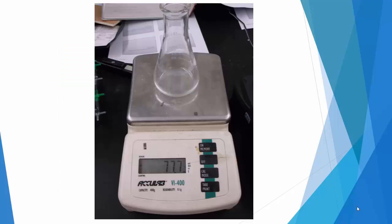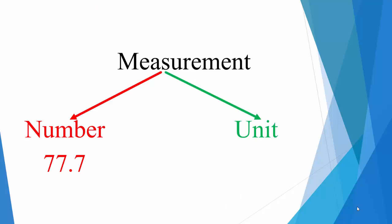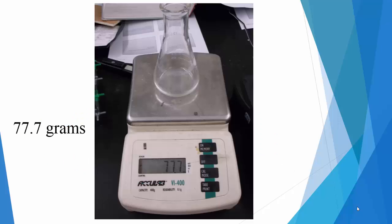Here we have a flask on a scale. We can see the number. It's 77.7, but 77.7 what? The unit here is grams. So this flask weighs 77.7 grams.